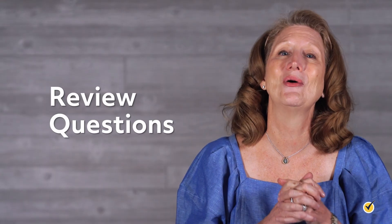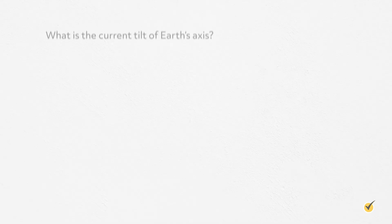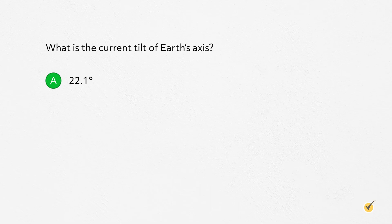Okay, before we go, let's go over a couple of quick review questions. What is the current tilt of Earth's axis? A: 22.1 degrees, B: 90 degrees, C: 23.5 degrees, or D: 24.5 degrees?